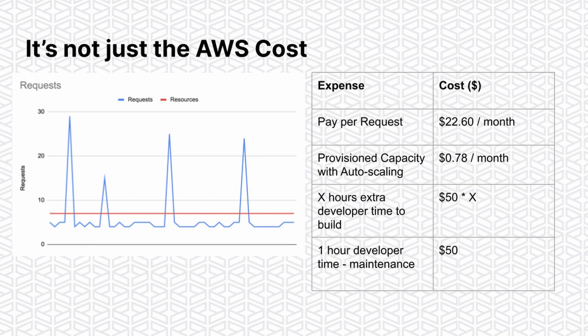The issue is that because you've got all this extra code, someone will need to reuse it, update it, and maintain it. For every hour a developer spends maintaining or updating that code, it makes the cost for your provisioned capacity significantly higher. So make sure you consider these costs when deciding whether to use pay per request or provisioned — not just the AWS costs.